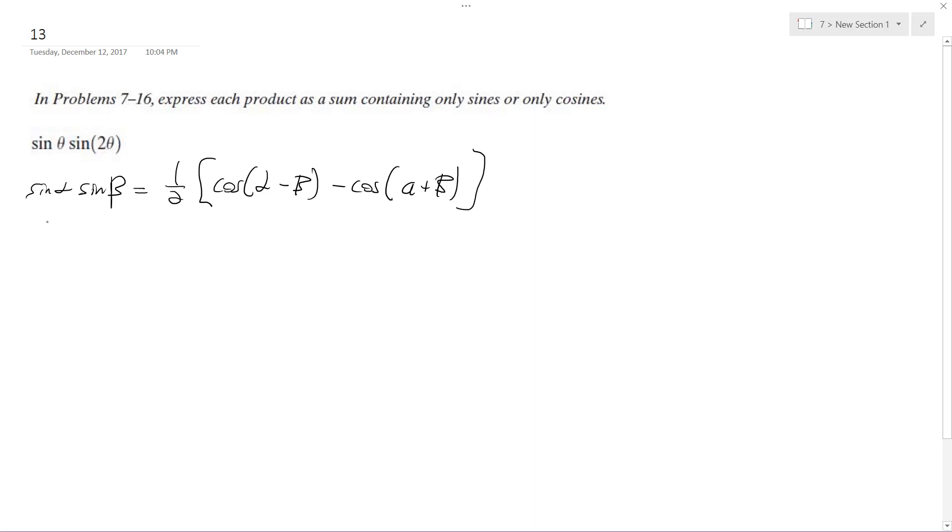So my alpha is going to be theta and my beta is going to be 2 theta. So I'm going to get one half of cosine theta minus 2 theta minus cosine of theta plus 2 theta.